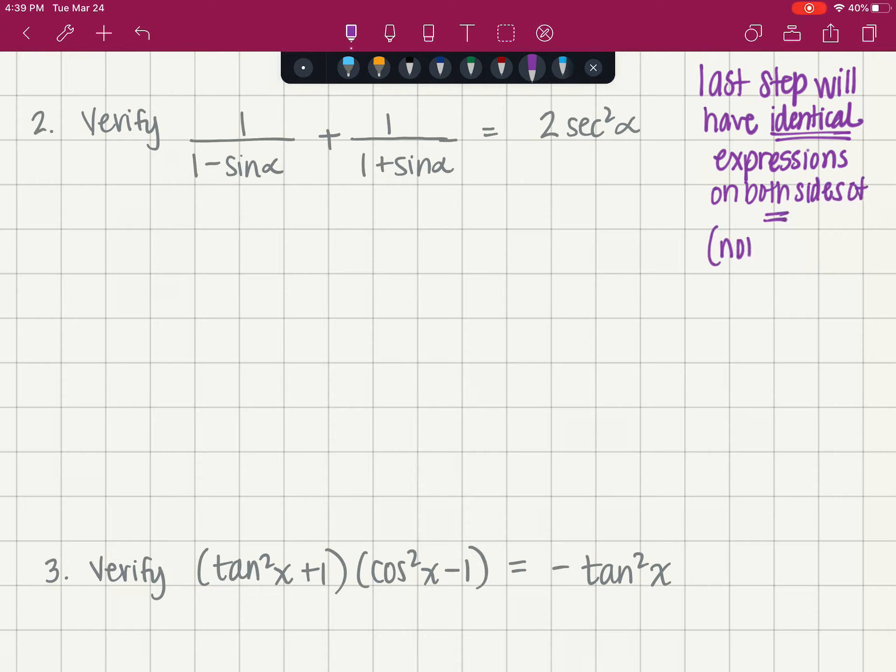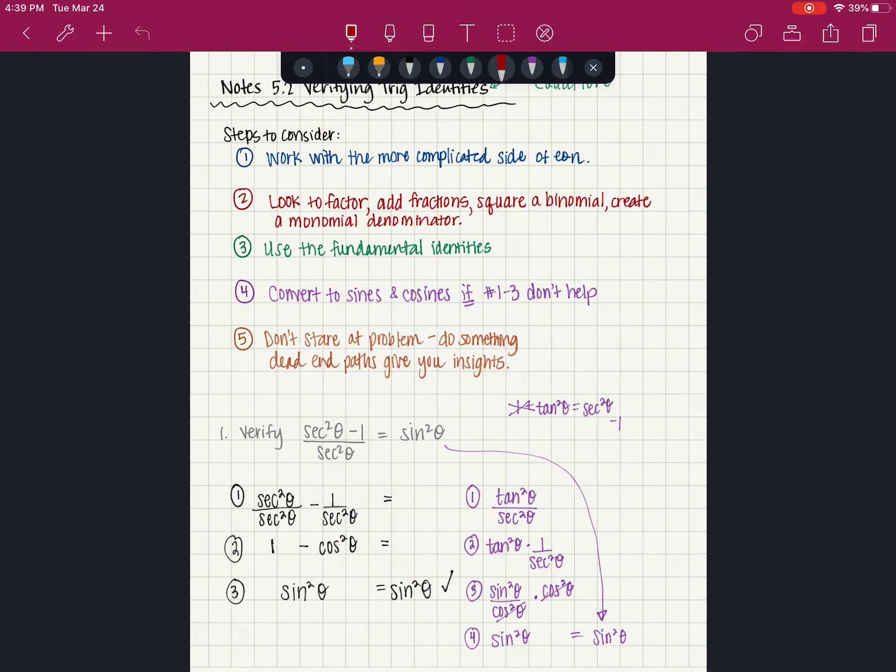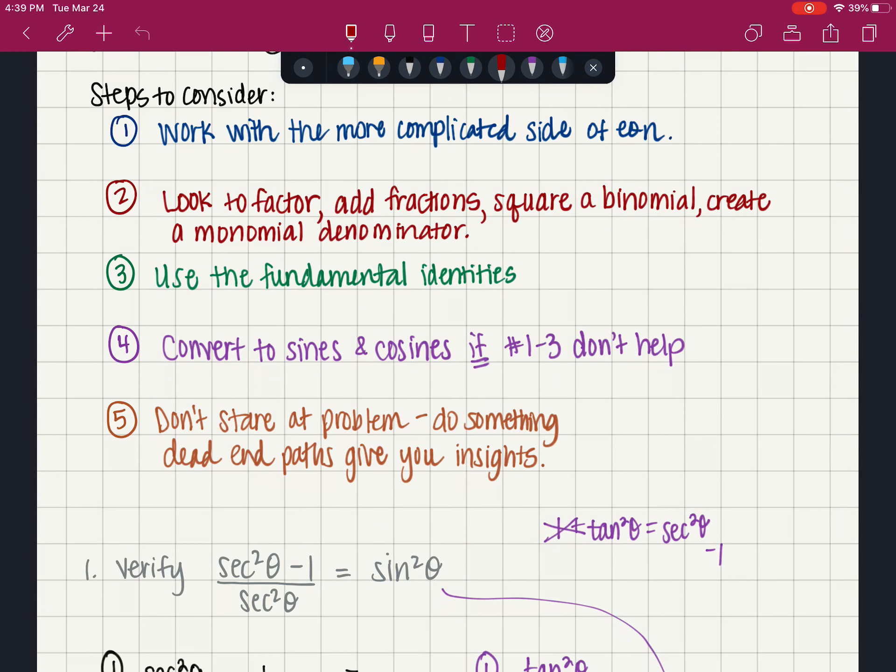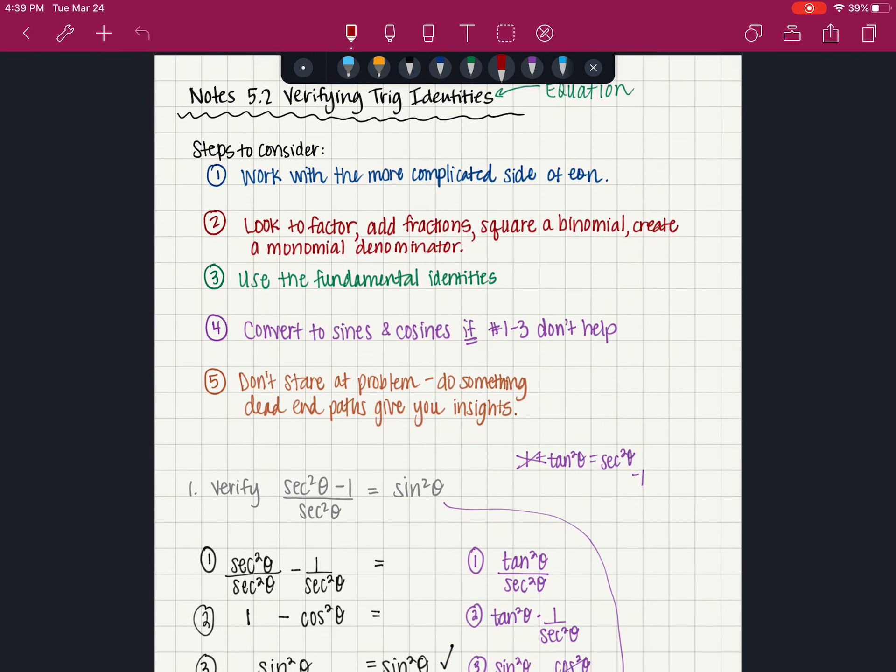Not equivalent, we want identical. Okay, so here's a problem. We're going to work with the more complicated side. I would definitely say that the left-hand side is more complicated than the right-hand side. Going through my steps, we look to factor, add fractions, square binomial, create a monomial denominator. Look at that, add fractions. I've got two fractions here that I need to add together.